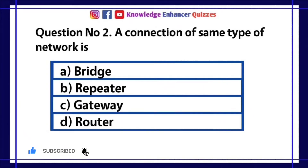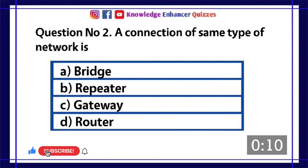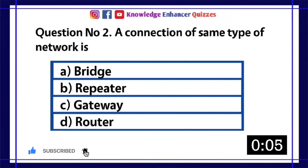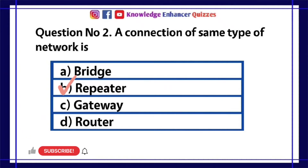Question number 2. A connection of same type of network is. A bridge. B repeater. C gateway. D router. Option B is the right answer.